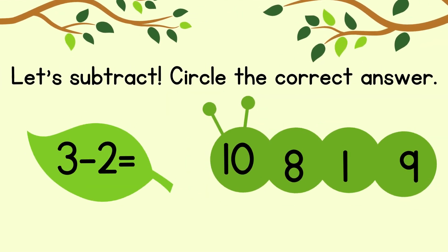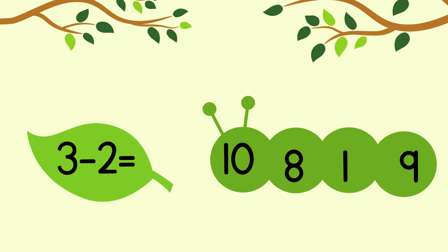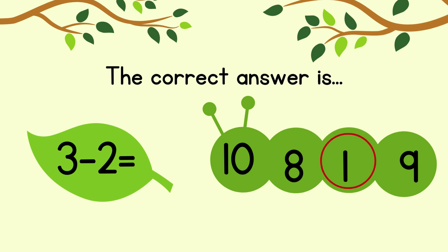Circle the correct answer. 3 minus 2 equals. The correct answer is 1.